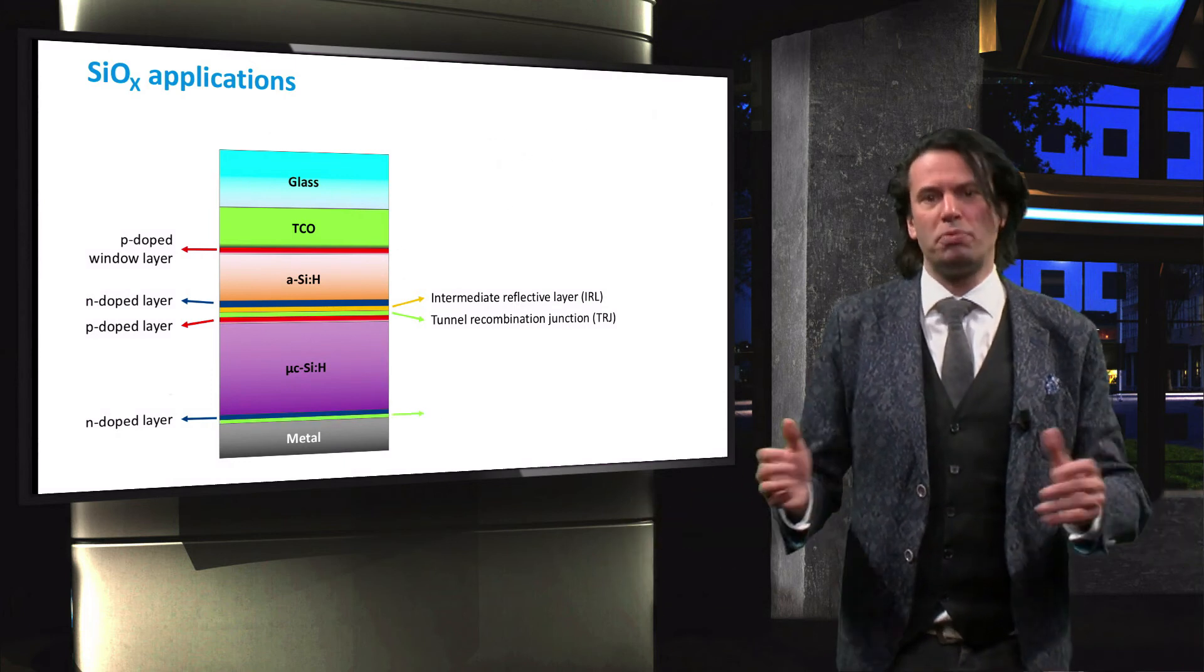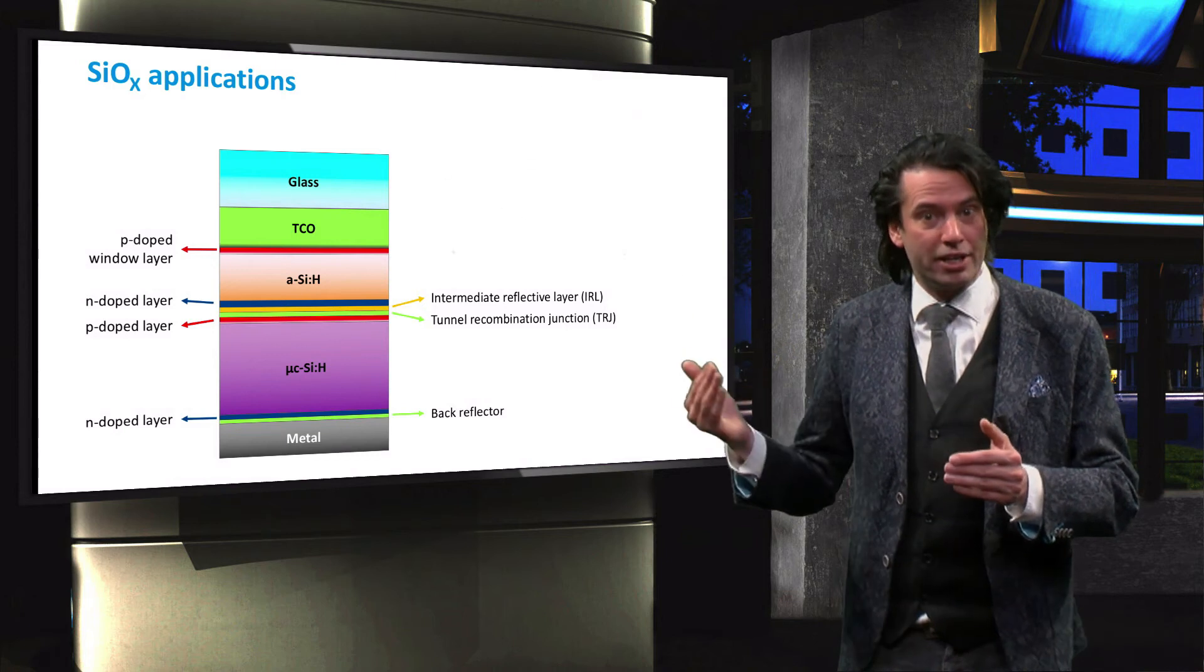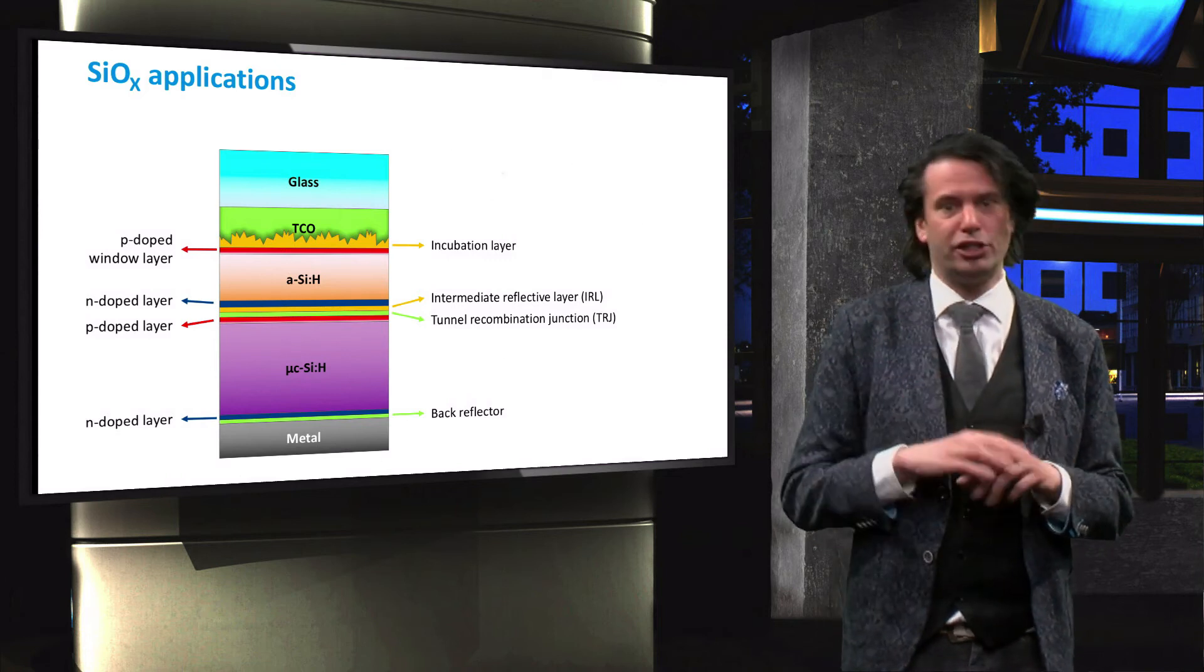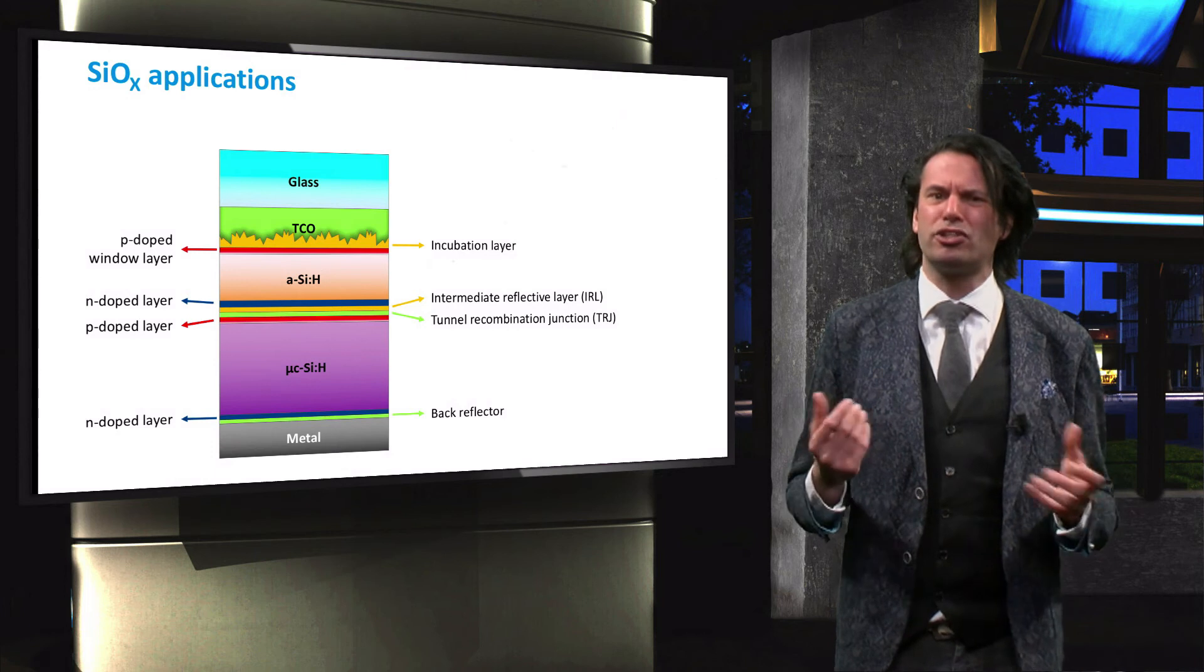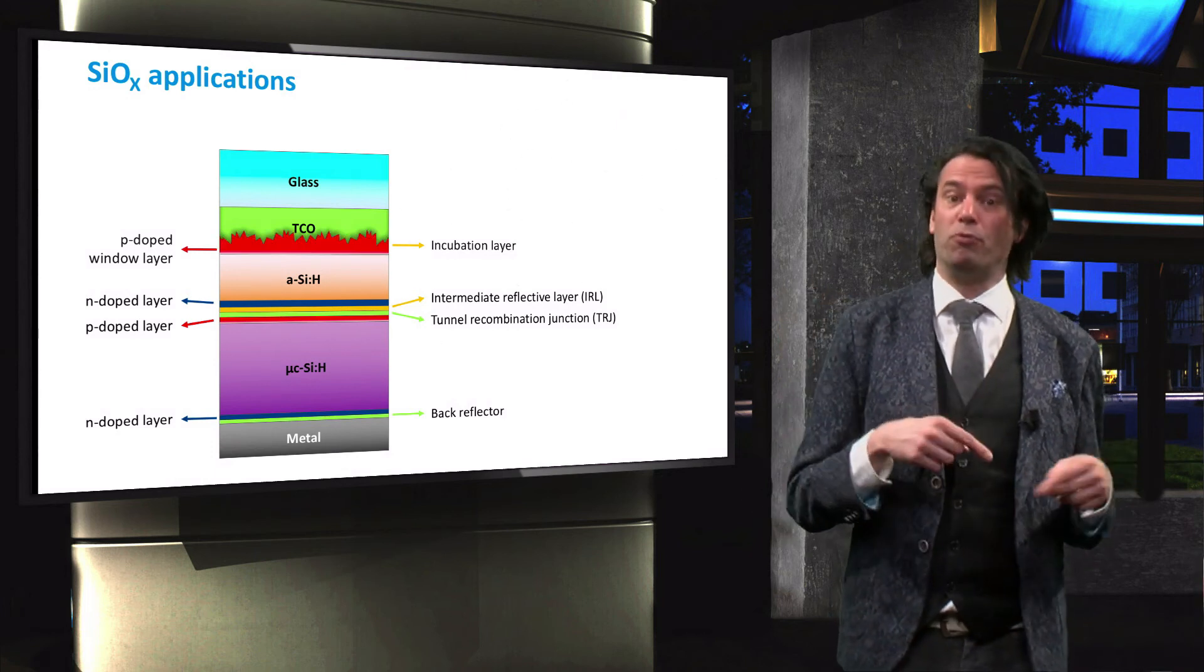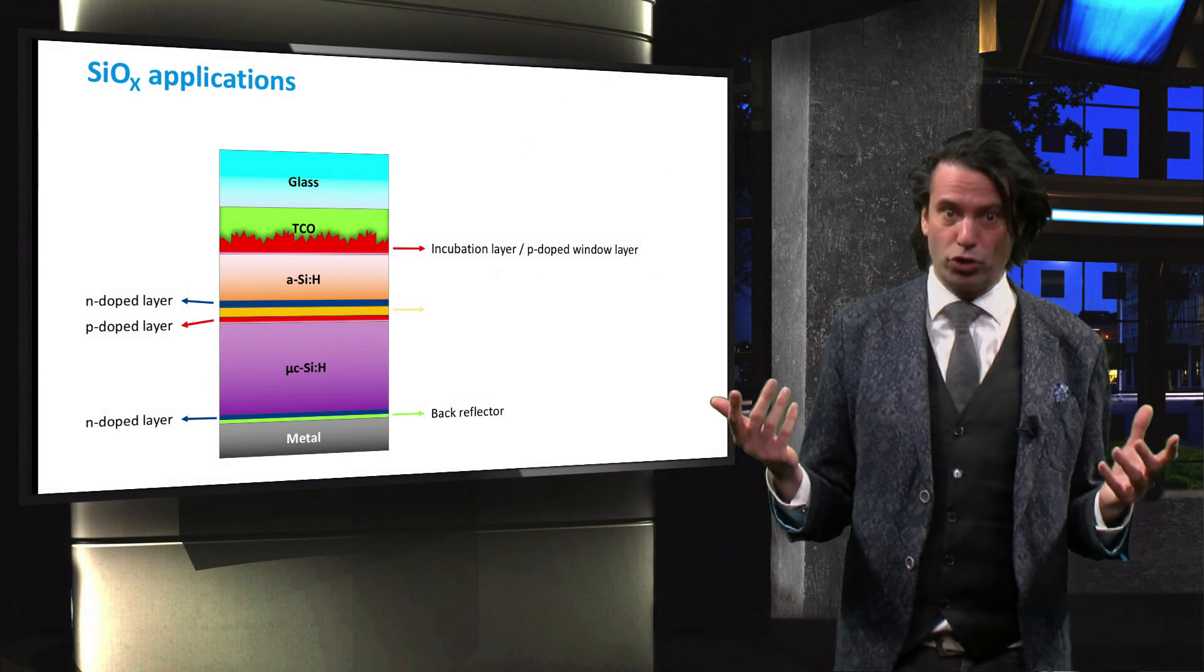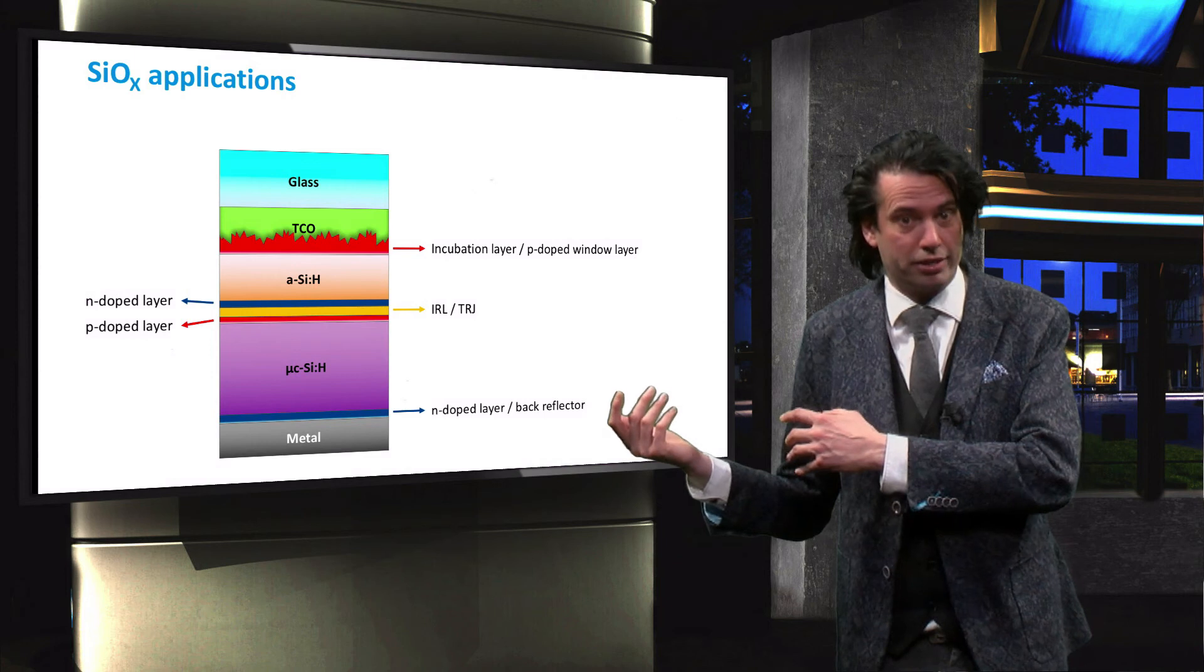Silicon oxides have also been applied as a back reflector and even as a buffer layer or incubation layers for when a TCO with a sharp surface feature is used. Moreover, by cleverly designing these layers, some of the functions can be combined. The p-doped window layer can simultaneously function as an incubation layer. The intermediate reflective layer is also a tunnel recombination junction and the n-doped back layer functions as a back reflector.